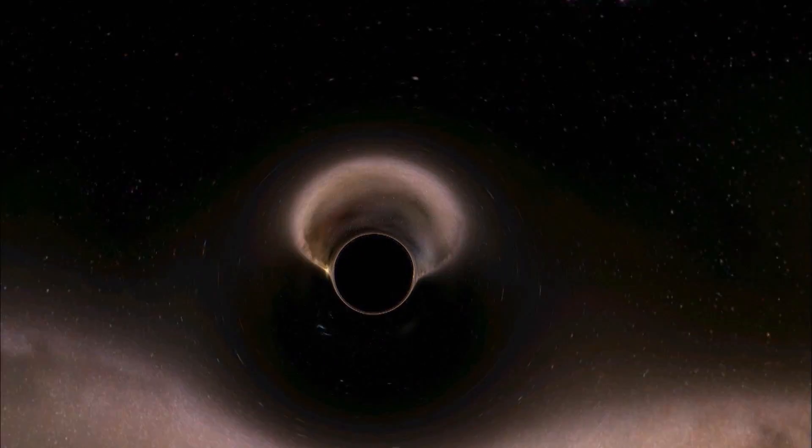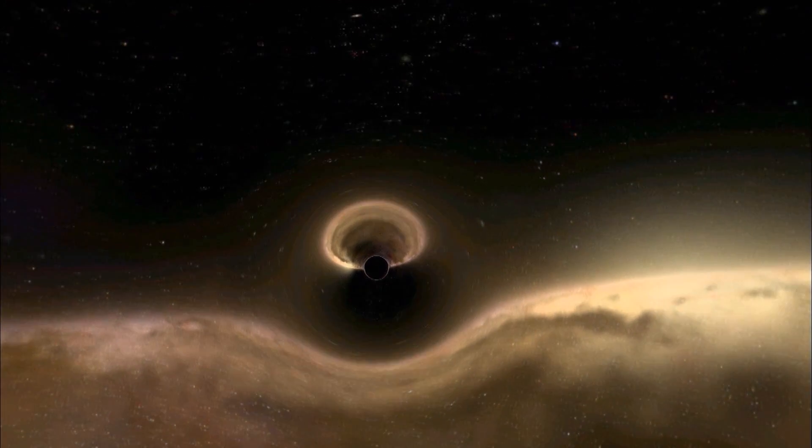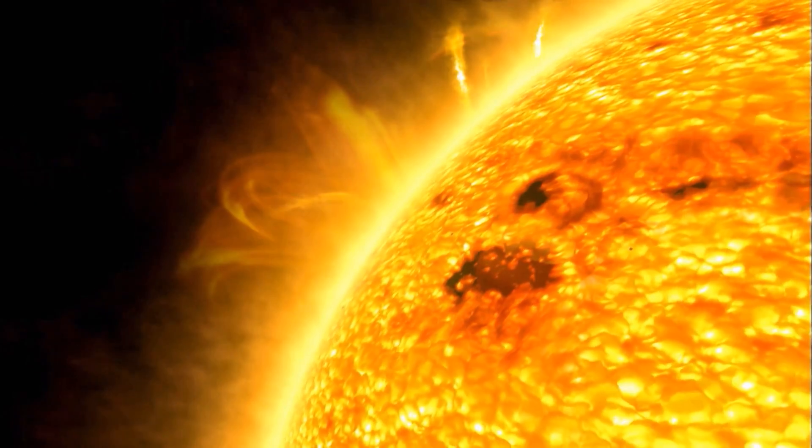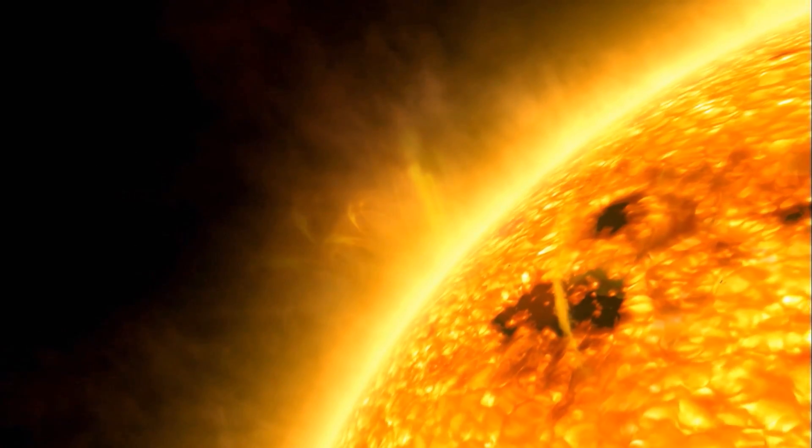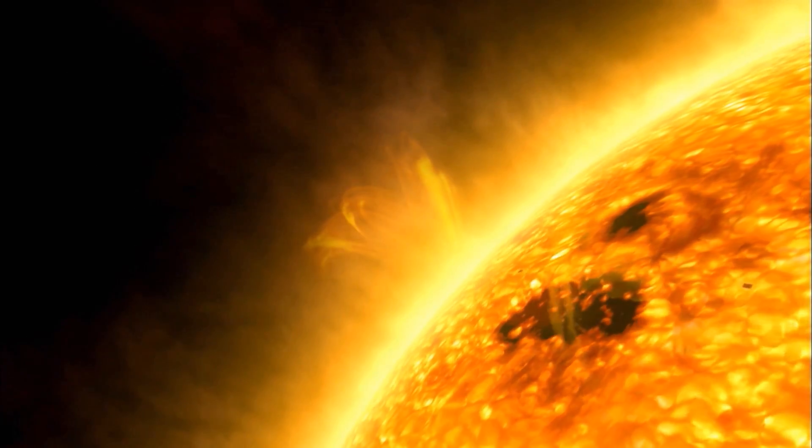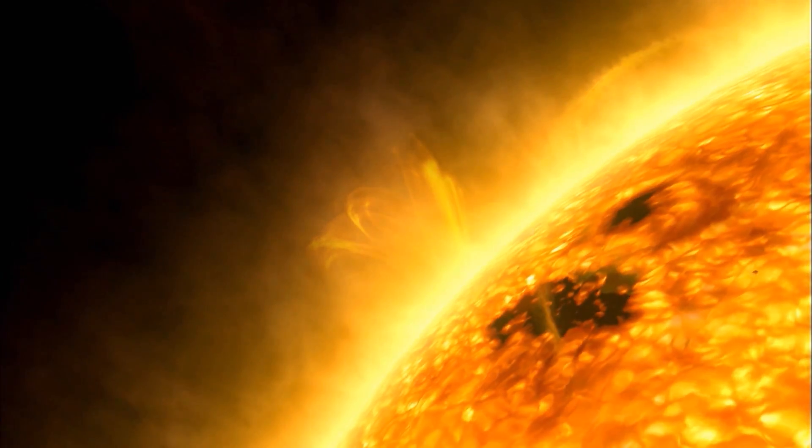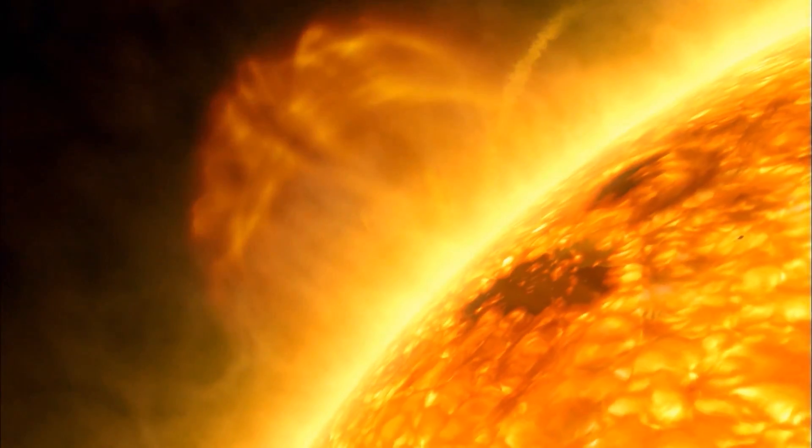How did they form? And how did they get so large? All stars shine by burning light elements like hydrogen. In the largest ones, intense heat fuses these elements into heavier ones, like carbon, silicon, and finally iron.